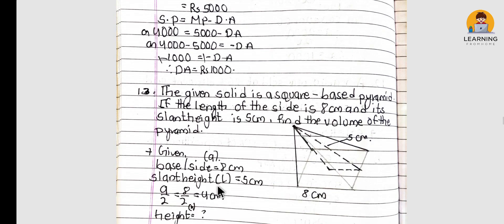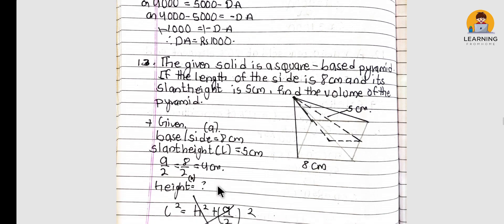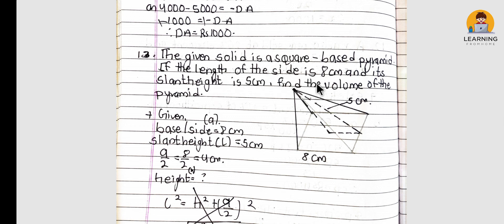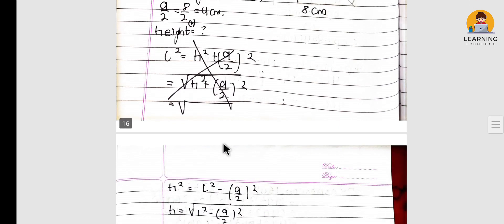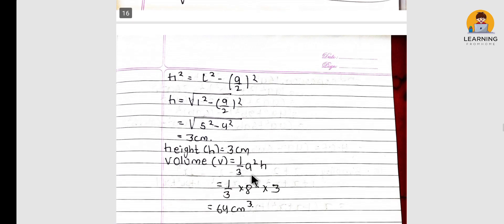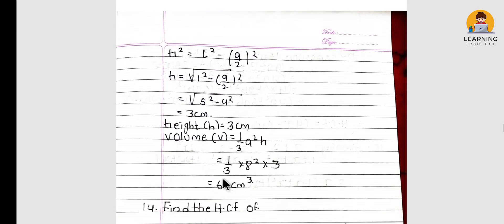The given solid is a square base pyramid. If the length of the side is 8 cm and its slant height is 5 cm, find the volume of the pyramid. Using L² = h² + (A/2)², we get height = 3 cm. Then volume = (1/3) × A² × h.